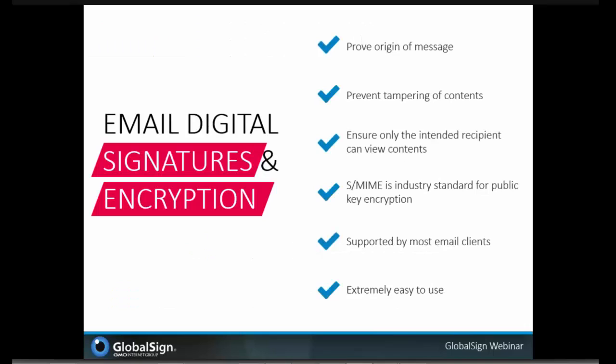S/MIME is a technology that utilizes digital certificates to both digitally sign and encrypt email. Digitally signing proves the origin of the message and detects if the message has been tampered with, whereas encryption makes sure that the message is confidential — sent in an encrypted format — and only the intended recipient can decrypt the information using the private key associated with the digital certificate. S/MIME stands for Secure Multi-Purpose Internet Mail Extensions, and it is an industry standard for public key infrastructure encryption for MIME-based or message-based data.